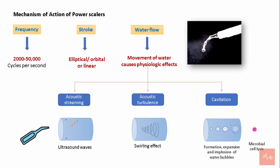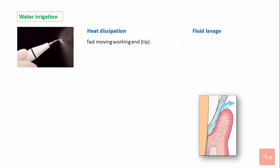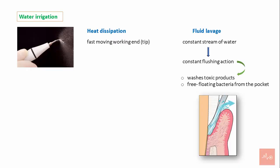The bubbles implode and produce shock waves in the liquid, creating further shock waves throughout the water and causing bacterial lysis. Water irrigation aids in heat dissipation arising from the fast-moving working tip. Fluid lavage — a constant stream of water — provides a constant flushing action that washes toxic products and free-floating bacteria from the pocket.